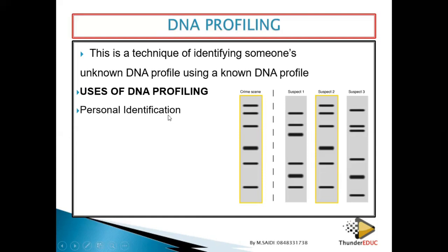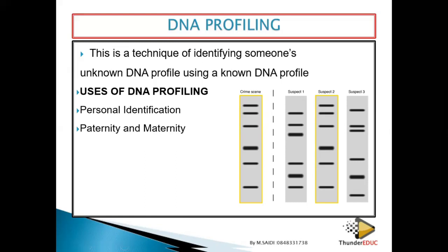Number one, it is used for personal identification. If someone is missing or has been burned, it is easy to identify that person using DNA profiling. Number two, paternity and maternity — if you don't know your mother or father and there are two people claiming to be the parent, we can use this technique to identify the actual parents.